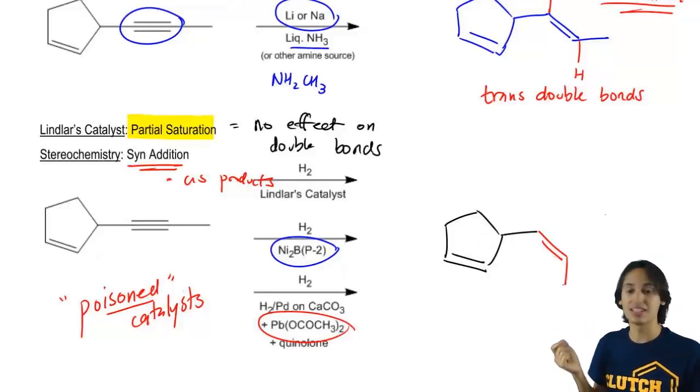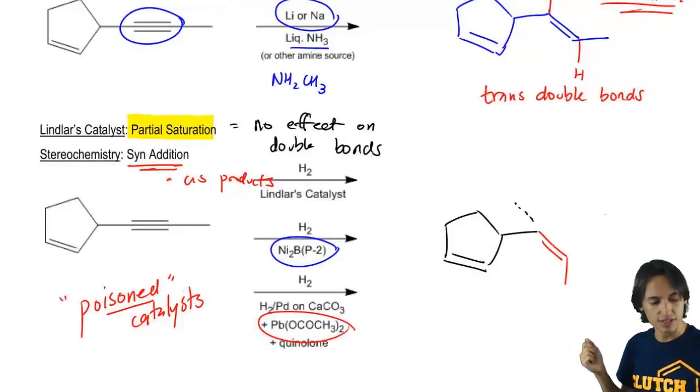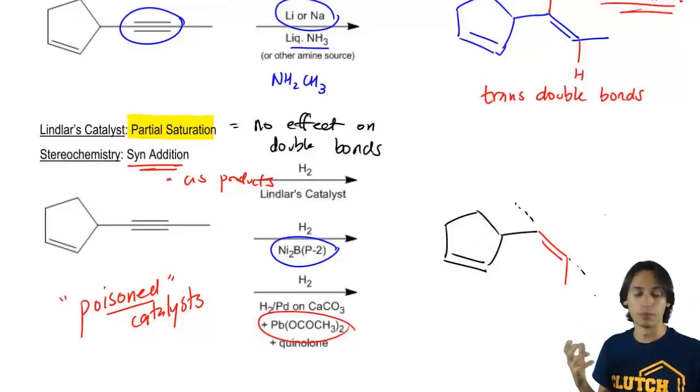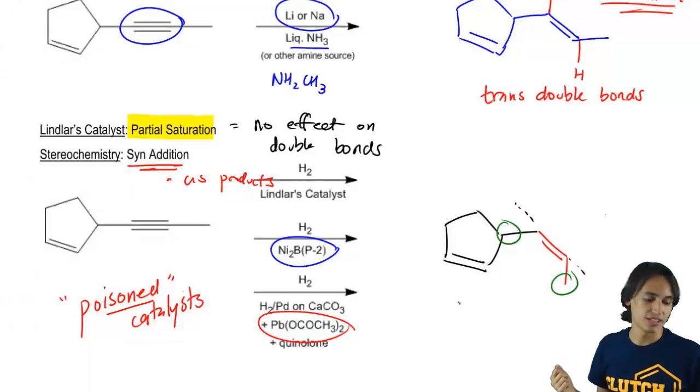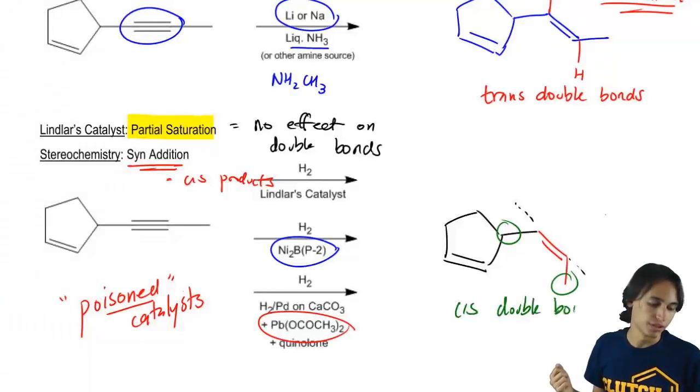So I'm going to get out of the way here and draw this for you. I would actually want to draw my stick down this time. Why? Because if I create a little fence parallel to this double bond, what I see is that now both of my groups are going to be on the same side of that fence. So this creates cis double bonds.